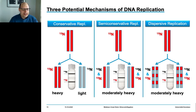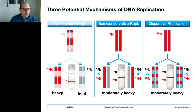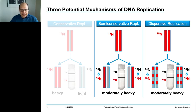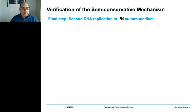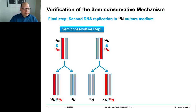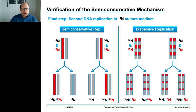Meselson and Stahl found a single band of DNA in their experiment, thus ruling out the conservative replication mechanism. But there were still two options, so Meselson and Stahl solved this by doing a second DNA replication again in N-14 culture medium and predicted the potential reaction outcome.